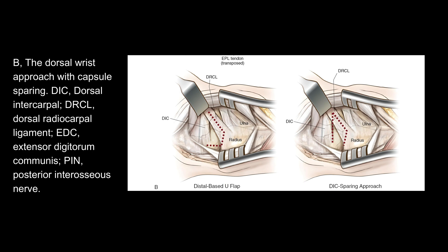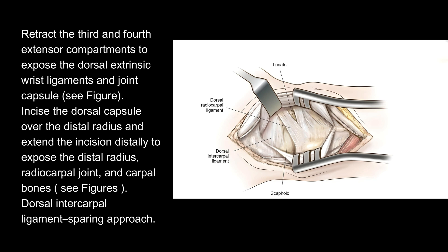The dorsal wrist approach with capsule sparing. D.I.C. — dorsal intercarpal ligament. Dorsal interosseous nerve. Retract the third and fourth extensor compartments to expose the dorsal extrinsic wrist ligaments and joint capsule. Incise the dorsal capsule over the distal radius and extend the incision distally to expose the distal radius, radiocarpal joint, and carpal bones.